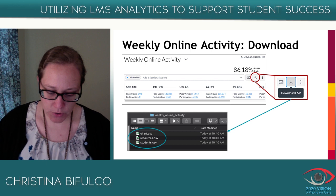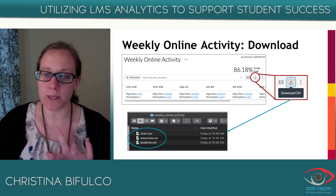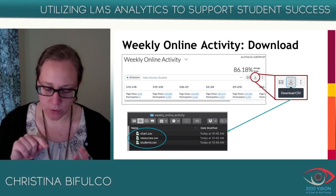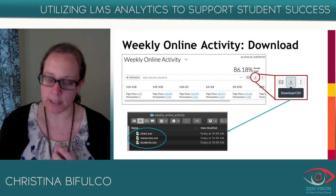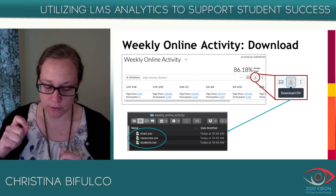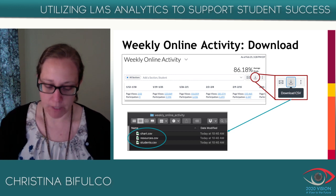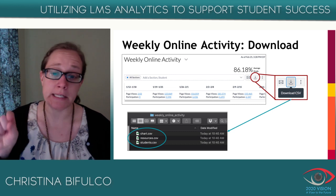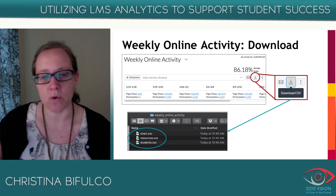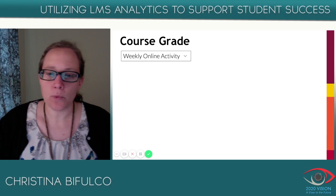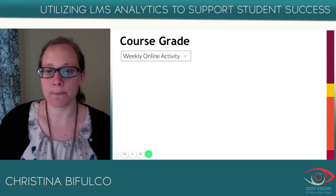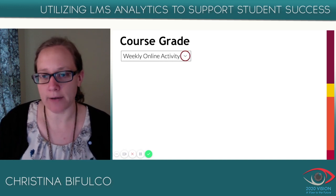You can also do this for just one week. The download showing several weeks of information covers the full course. But if you go back and click on a specific week's information pane, you can download files just for that week. If you do the weekly download, you won't see the chart file because it's not showing data over time — it's only for that one week. When you click on the weekly online activity, the system defaults to that view, but you can click the dropdown carrot on the side to select Course Grade.